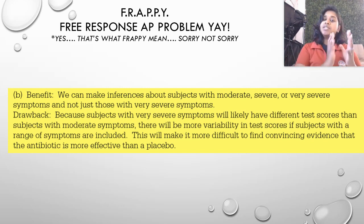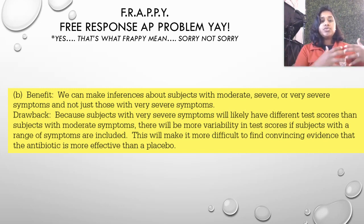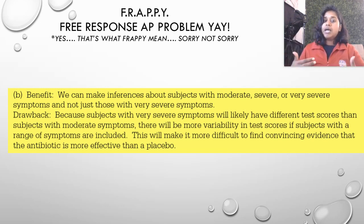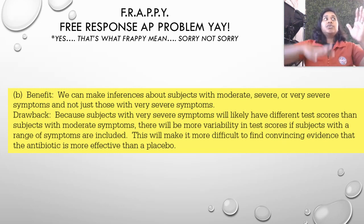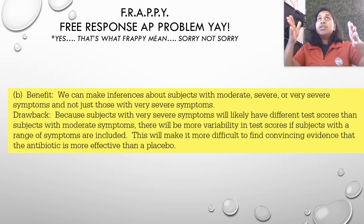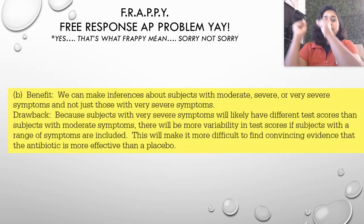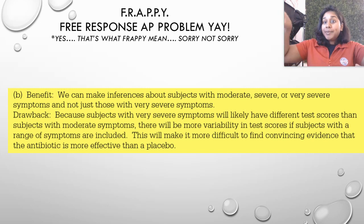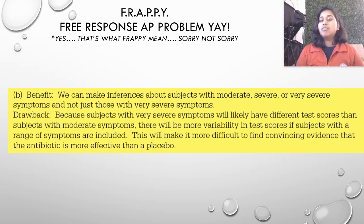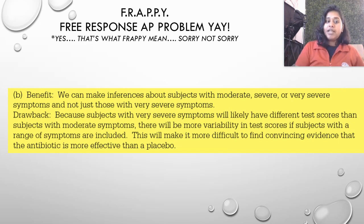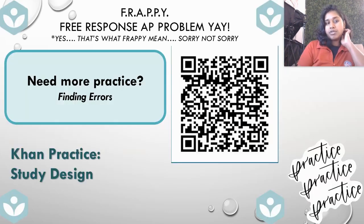The drawback of using different types of symptom levels is variability. Because we're looking at all sorts of different symptom levels, you have a lot of variability in their test scores. People with moderate, severe, and very severe symptoms will group differently. This variability will make it more difficult to find convincing evidence that the antibiotic is more effective than a placebo — you might have to break them up into separate severity groups.